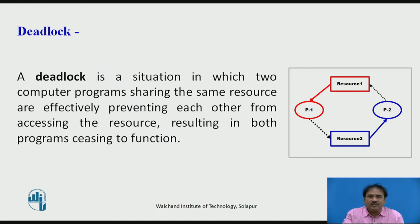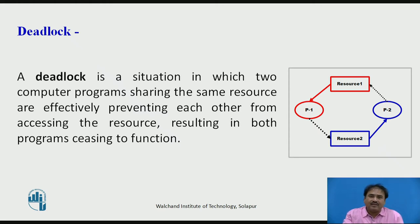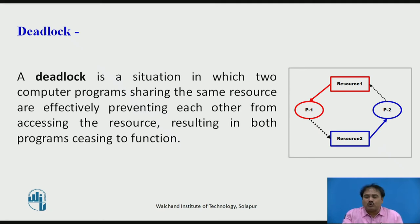What is deadlock? If you see carefully from the diagram, there are two processes P1 and P2. P1 has resource one already allocated to it, and P2 has resource two. The darker arrows show that resource one is allocated to process P1, and resource two is held by process P2. Now for P1's execution, P1 requires resource two, which is held by P2. And P2 also wants resource one for its execution. In this case, both processes are waiting to get the other resource, so no process gets executed. This kind of situation is called a deadlock.